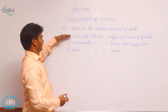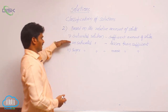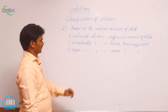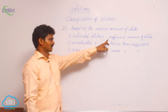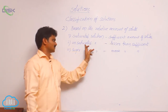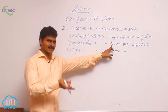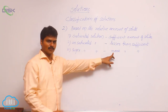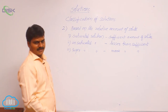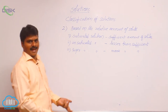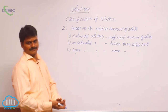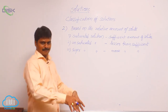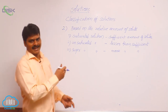So in this category there are three types: saturated, unsaturated, and supersaturated. Saturated means which contains sufficient amount. Unsaturated means which contains lesser than the sufficient. Supersaturated means which contains more than the sufficient amount. Generally, supersaturated solutions are unstable. When they are kept at room temperature, they become saturated by precipitating the extra solute.